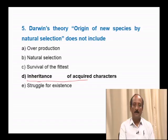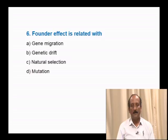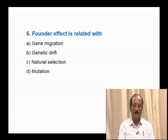Question number 6: Founder effect is related to — gene migration, genetic drift, natural selection, mutation. Founder effect means the formation of new species from earlier species by changing the gene frequency. The earlier species which gave rise to new species are called founder species and the effect is called founder effect. Since it is related to the change in gene frequency, the correct answer is genetic drift.